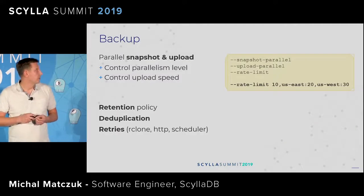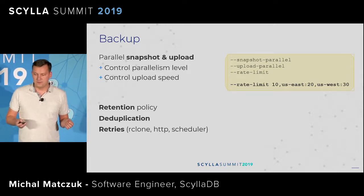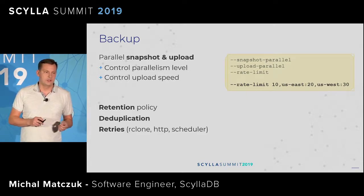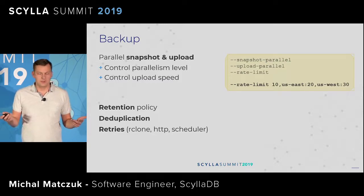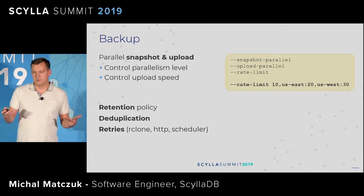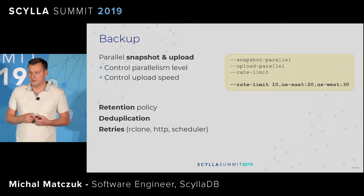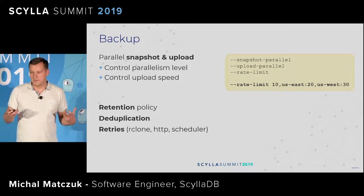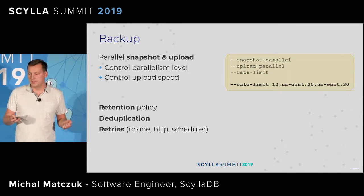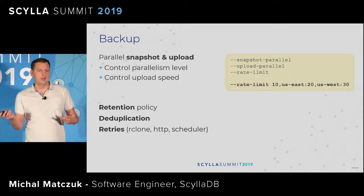The backup strategy we use is snapshot and upload. You can have a retention policy as an integer — for example, you may say you want backups every day but only keep the last two days. Similar to repair, we have retries built in at different layers: RClone has its own retries, we have HTTP retries for Scylla server-to-agent communication, and we have backup scheduling for full jobs. You can control rate limits — all limits are DC-aware, so you can specify different parameters per DC using glob patterns.